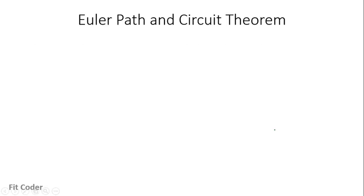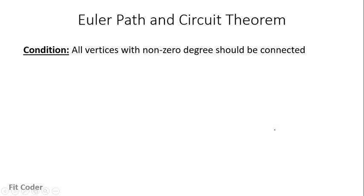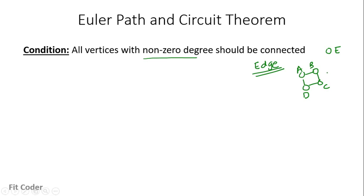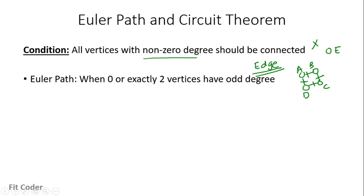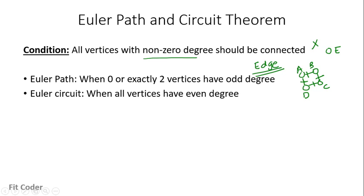Now let's look at the Euler path and circuit theorem. This theorem helps us identify whether a given graph contains an Euler path or circuit. There is a base condition: all vertices with non-zero degree should be connected, because in an Euler path or circuit we have to visit each edge of the graph. Once this precondition is satisfied, an Euler path is present when exactly 0 or 2 vertices have odd degree. An Euler circuit exists when all vertices have even degree.